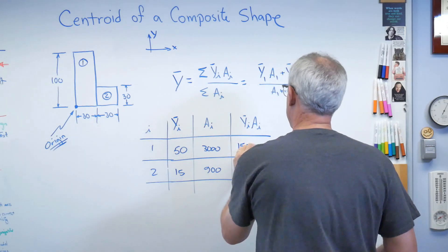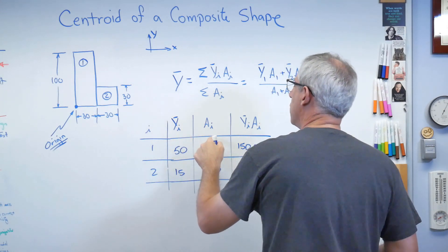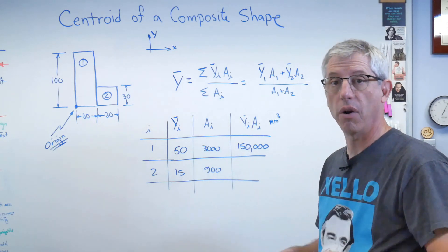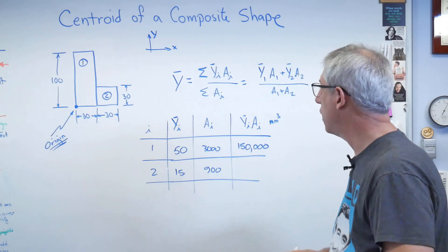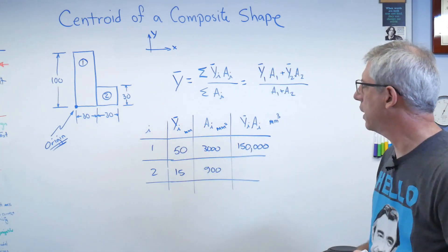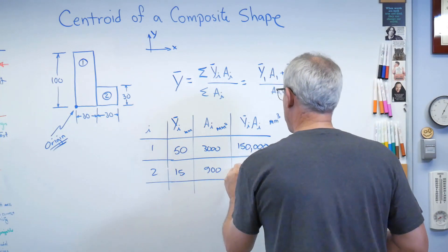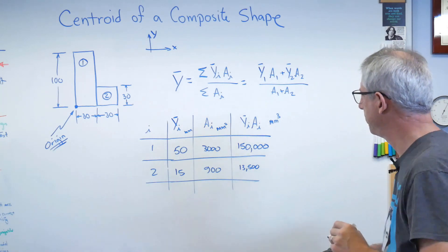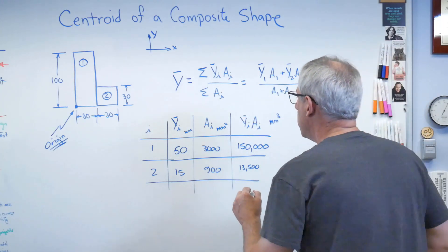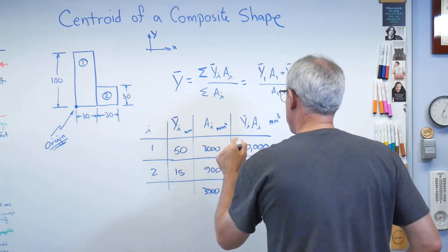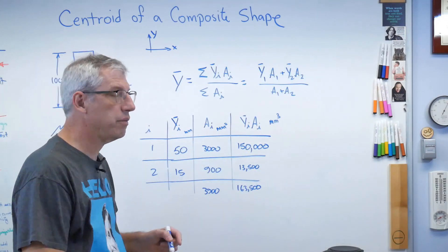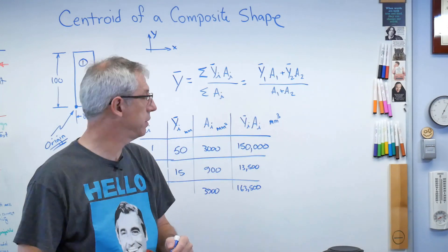For the area column: 100 times 300 is 3,000 mm², and 30 times 30 is 900 mm². Multiplying to get y-bar times A: box one gives 150,000, and box two gives 13,500. This last column is in millimeters cubed — not because it's actually a volume, but because it's a moment: an area times a distance.